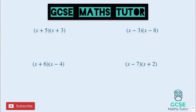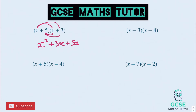Expanding the first one: x times x is x squared, x times 3 is 3x, then 5x, and then 15. Tidying up the two middle ones — 3 plus 5 is 8 — so x squared plus 8x plus 15.